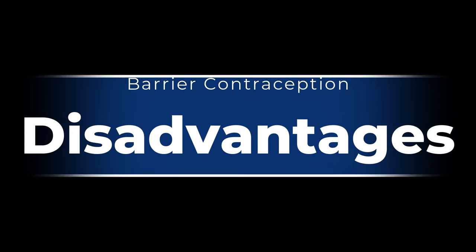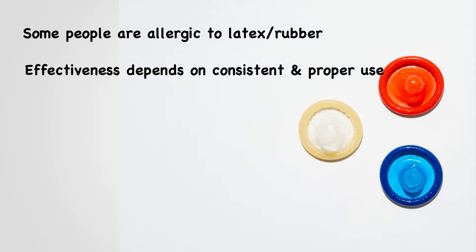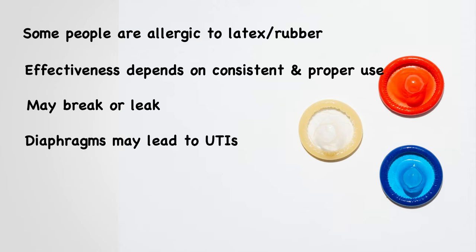The disadvantages of the barrier method are that some people are allergic to latex or rubber. For such people, polyurethane or plastic condoms are available. Their effectiveness depends on consistency and proper use, and they may break or leak. Diaphragms may also lead to urinary tract infection.